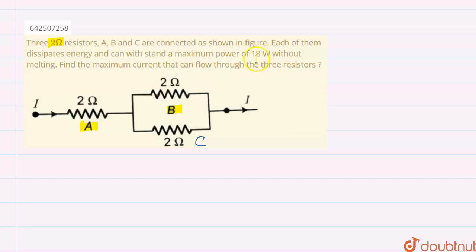given that these all three resistors can have a maximum power of 18 watt without melting. We have to find the maximum current that can flow through the three resistors. So let's say that the current I flows through this